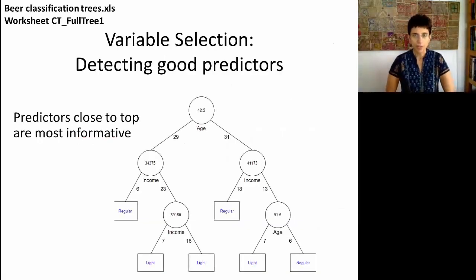One very nice use of trees is for variable selection, in other words, detecting which are the good predictors. Remember that we can actually see which predictors play a major role in the tree by simply finding out which predictors appear in the tree. In the example that we saw earlier, we used a bunch of different predictors, but only two of them showed up in our tree.